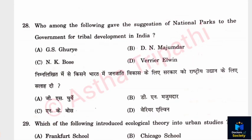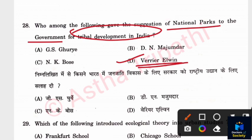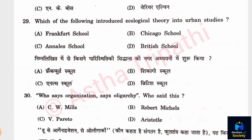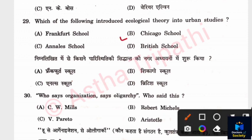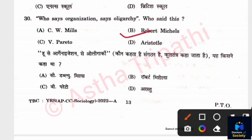Question 28: Who gave the suggestion of a National Park to the government for tribal development in India? Options: G. S. Ghurye, D. N. Majumdar, N. K. Bose, Verrier Elwin. The answer is Verrier Elwin. Question 29: Which school introduced Ecological Theory into Urban Studies? Options: Frankfurt School, Chicago School, Animals School, British School. The answer is Chicago School. Question 30: Who said 'organization says oligarchy'? Options: C. W. Mills, Robert Michels, Wilfredo Pareto, Aristotle. The answer is B — Robert Michels.